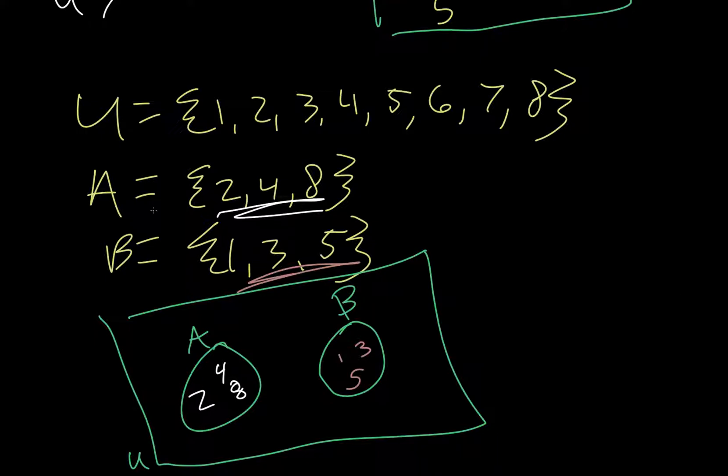And then, we need to see what we've used. So, we used one. We used two. We used three. We used four. We used five. We didn't use six, seven. Just six and seven. So, we can place them anywhere in U that's not inside A or B for those last ones.